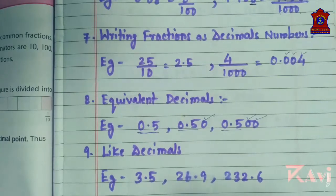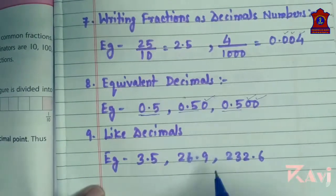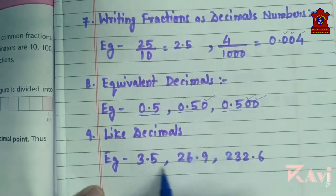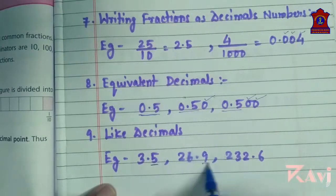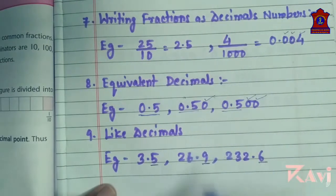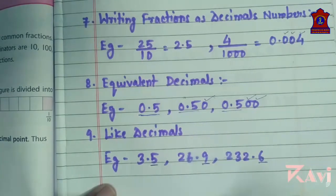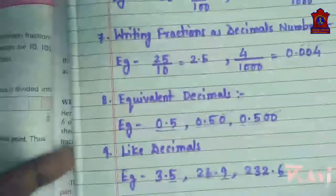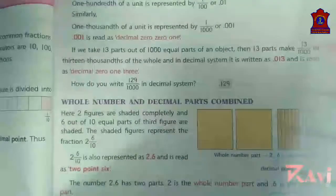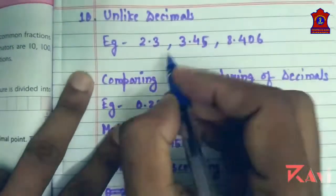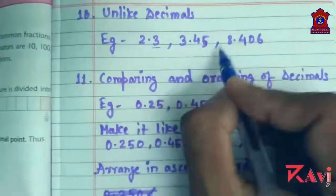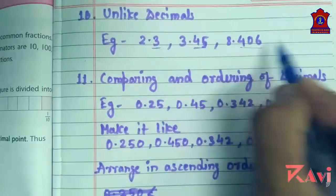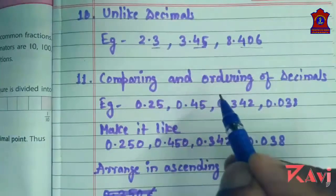Next is like decimals. Like decimals are decimals having the same number of decimal places — for example, numbers each with 1 decimal place. Similarly, for unlike decimals, you have different numbers of decimal places: here 1, here 2, here 3. So those are unlike decimals.